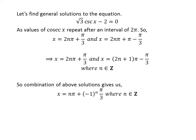As we know, 2 times n is an even integer and 2 times n plus 1 is an odd integer for any n. So the union of these two sets is the set of integers. Also, minus 1 raised to the power of n is minus 1 if n is odd and plus 1 if n is even. So the general solution to the equation is n times pi plus minus 1 raised to the power of n times pi upon 3, where n is any integer.